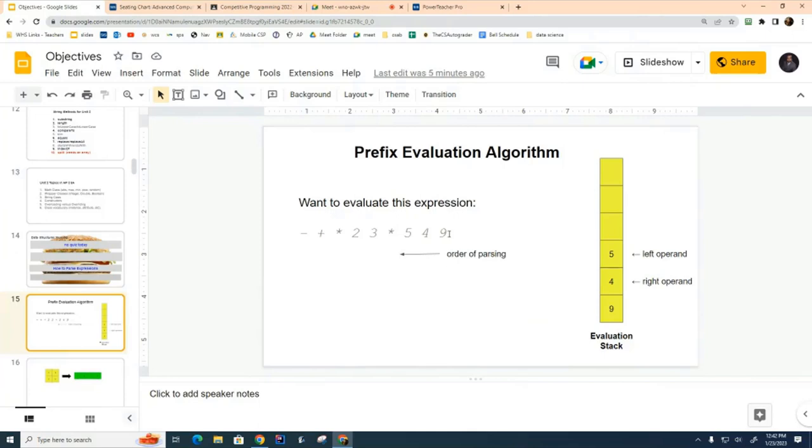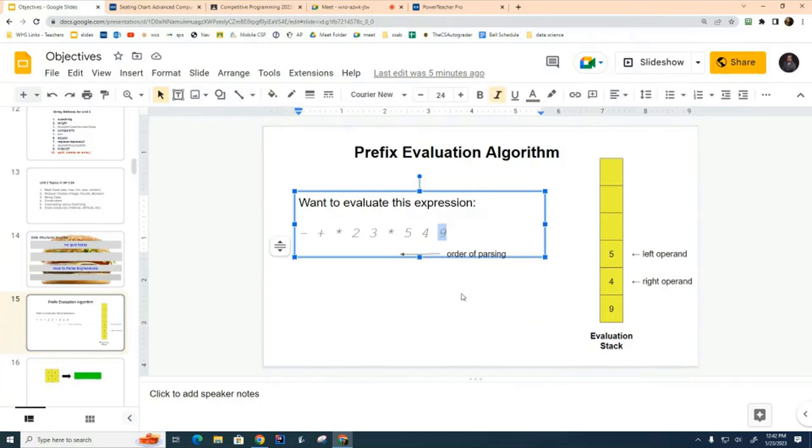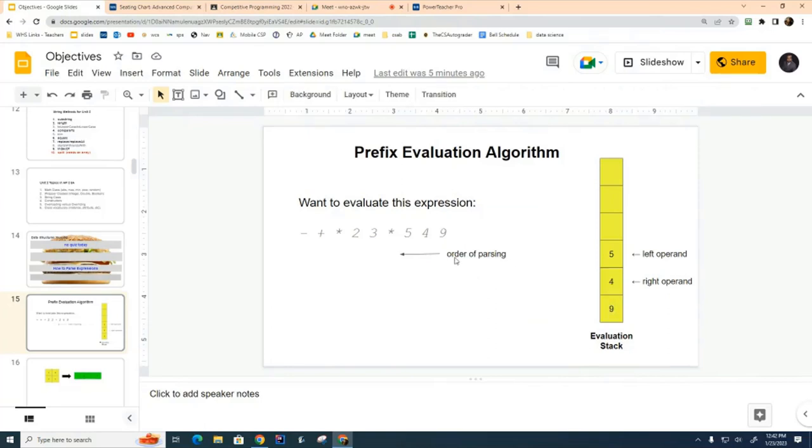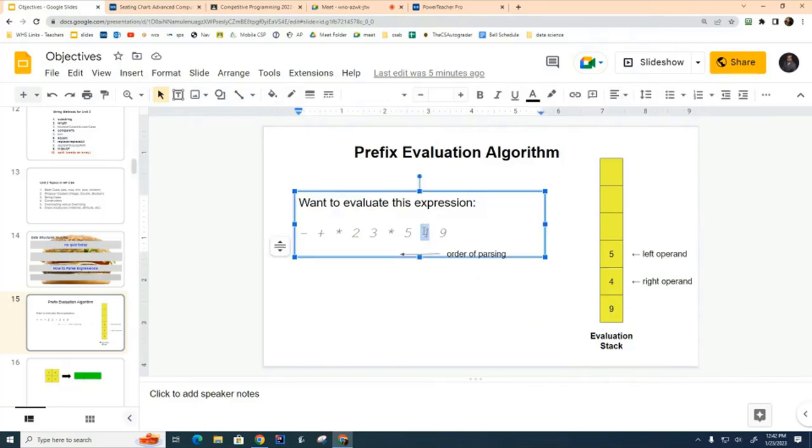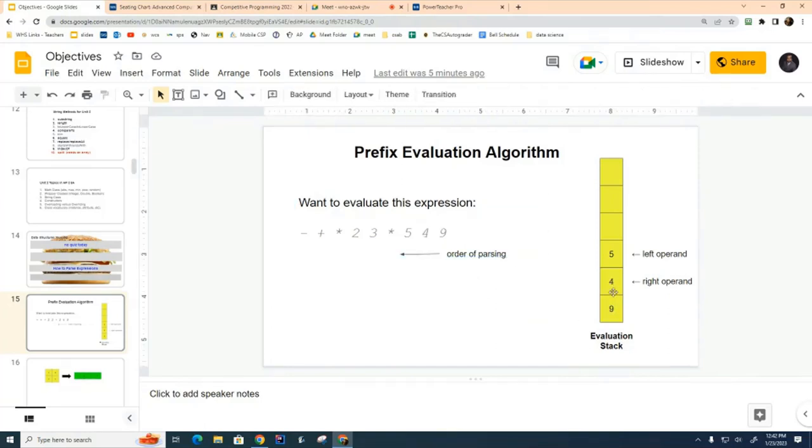I'm going to look at this nine and it's an operand, so I push it onto the stack. Then I look at the four and push it onto the stack. Then I look at the five and push it onto the stack. Finally, I come to the star and I have to evaluate now. I pop the top two elements from the stack. The first one I pop is my left operand, and the next one I pop is my right operand.